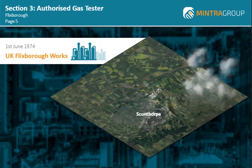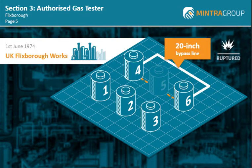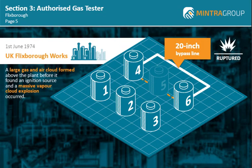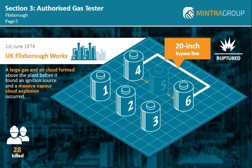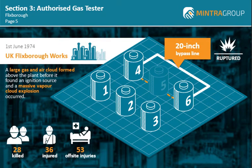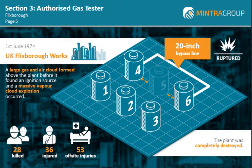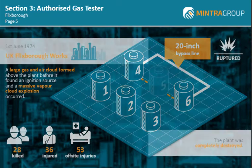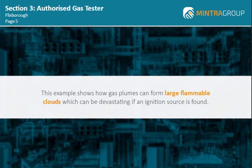On the 1st of June 1974, at the UK Flixborough works, a 20-inch bypass line ruptured and a large gas and air cloud formed above the plant before it found an ignition source and a massive vapor cloud explosion occurred. 28 workers were killed and a further 36 suffered injuries; a further 53 injuries were reported off-site. The plant was completely destroyed, with distillation columns collapsed and structural steelwork bent and twisted. This example shows how gas plumes can form large flammable clouds which can be devastating if an ignition source is found.